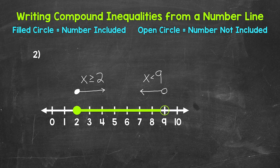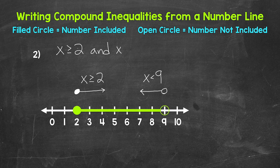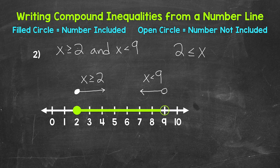These are our two inequalities that make up our compound inequality. Since this is an AND compound inequality, we want where these two inequalities overlap — X has to be greater than or equal to two and less than nine. So we write: X is greater than or equal to two and X is less than nine. We can also write AND compound inequalities without the word AND, placing the variable in the middle: X is greater than or equal to two and less than nine.